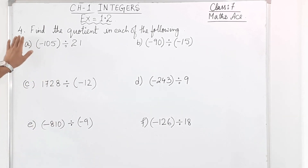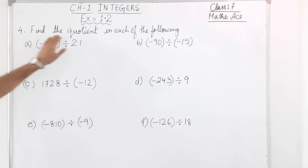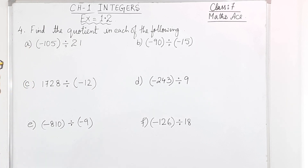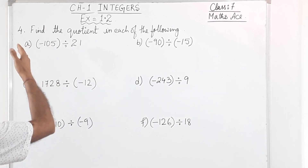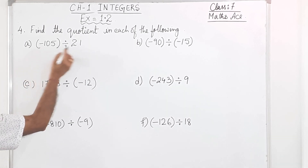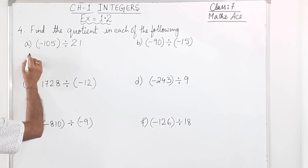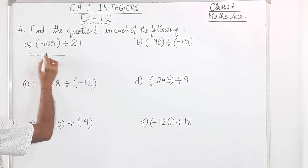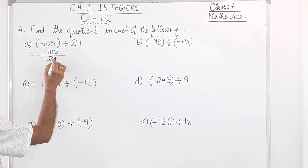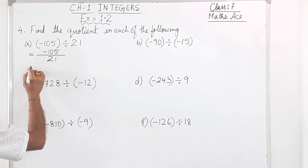Let's get started. Question number 4: find the quotient in each of the following. We have to find out the quotient, and from A to F the sums are given, so one by one we are going to solve them. This sum I can write as minus 105 by 21.